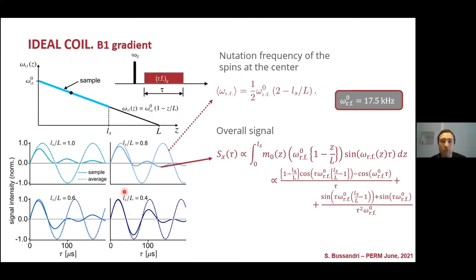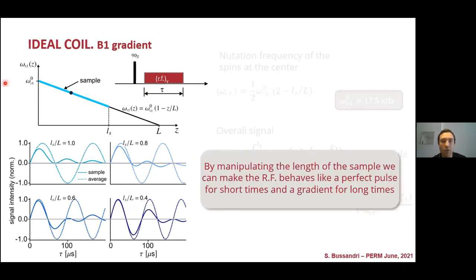So, what we can reach to this first conclusion is that by considering this V1 profile and by manipulating the length or the size of the sample, we can make that the RF behaves like a perfect pulse for short times and a gradient as it defays the magnetization for long times.